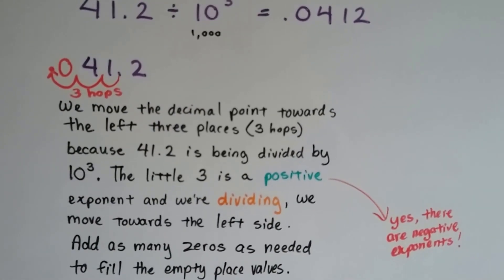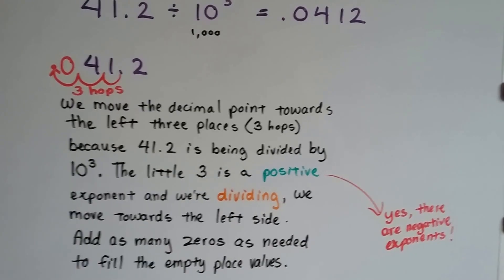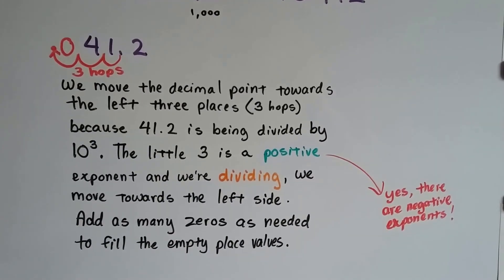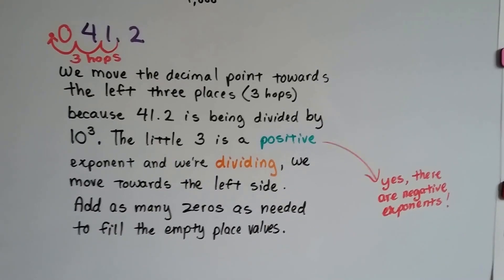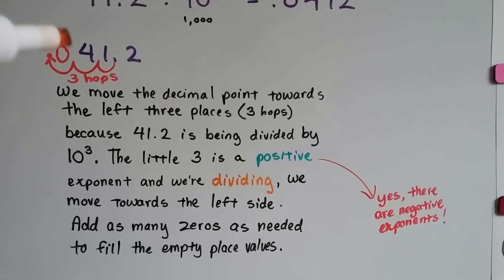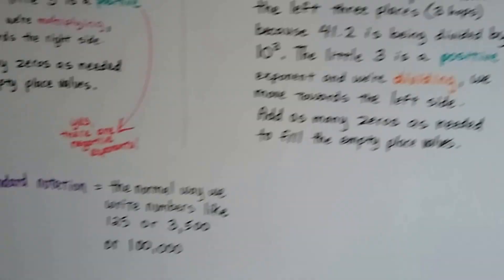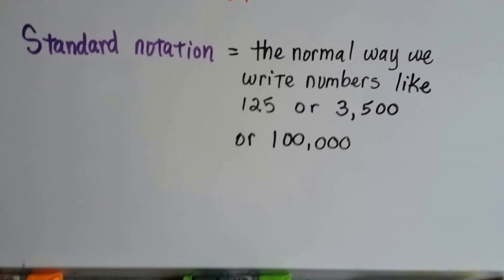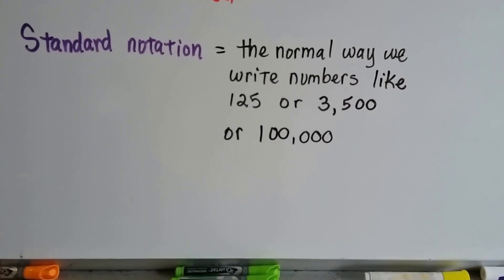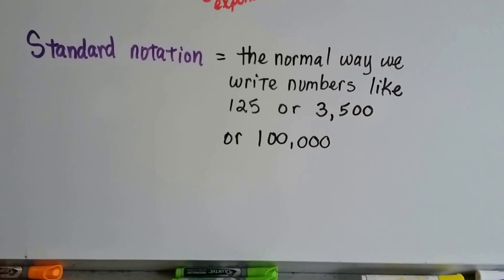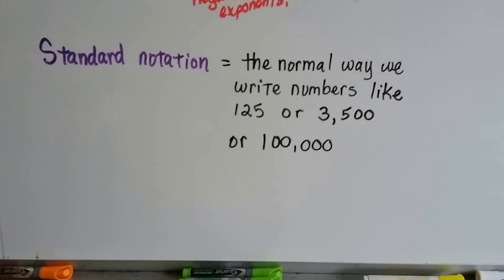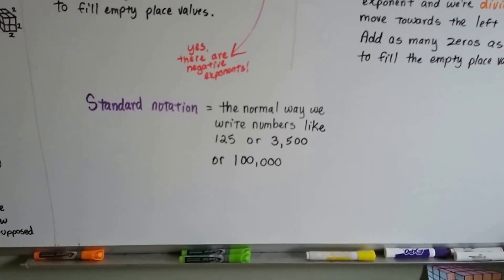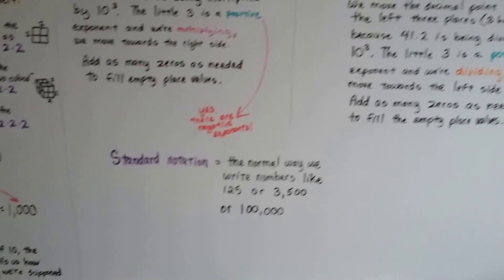The little 3 is a positive exponent and we're dividing, so we move towards the left. There are negative exponents — we're going to get into that in the next couple of videos. We add as many zeros as needed to fill any empty place values, and we had to add one. What we're normally doing when we write numbers is called standard notation — the normal way we write numbers like 125, 3,500, or 100,000. That's standard notation, and we're going to be coming up with a different type of notation in the next couple of videos.